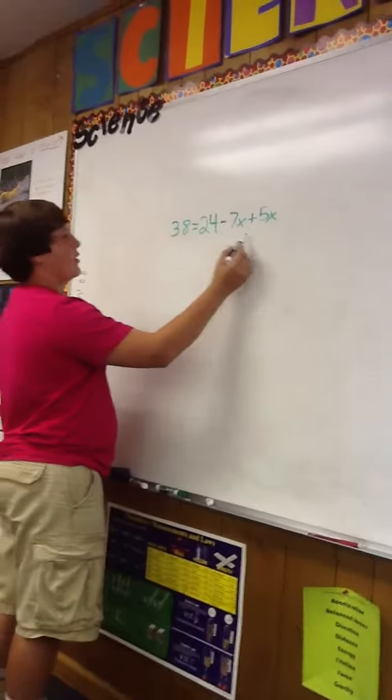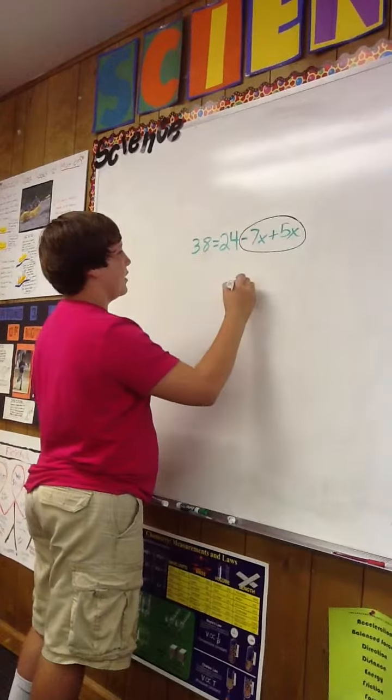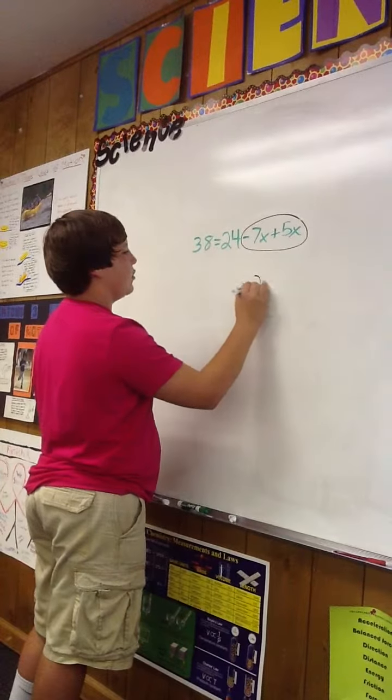First, I'm going to combine like terms. So I combine 7x plus 5x, and that's negative 2x.